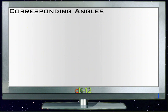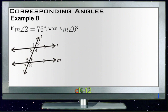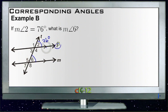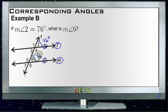Let's take a look at Example B. Example B says if the measure of angle two is 76 degrees, what is the measure of angle six? We know that line l and line m are parallel because we have our little marker here. If they're parallel and crossed by a transversal, then corresponding angles are going to be equal. Since angles two and six are both upper right-hand angles, they're both going to be 76 degrees.